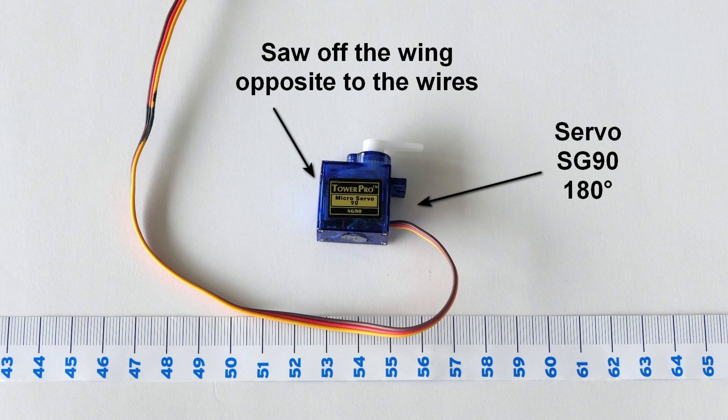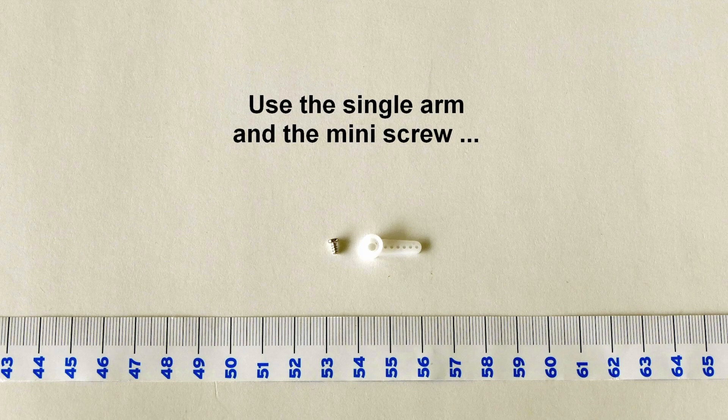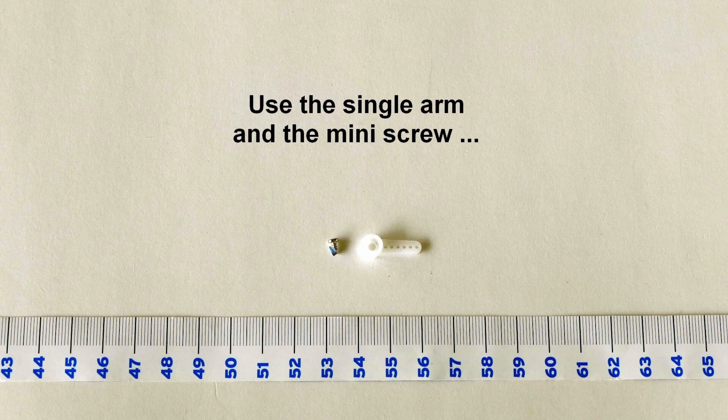The 90 degrees should be sufficient. One of these mounting wings needs to be sawn off because that is how we place it in the aluminum U-profile to make it fit snugly in there. Most often three different arms are supplied with the servo. The one that we need is the single arm, like shown here, which is mounted with the tiny screw that also comes in the package.